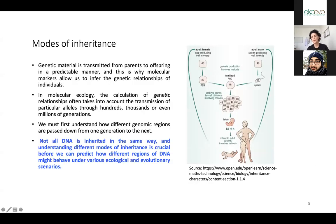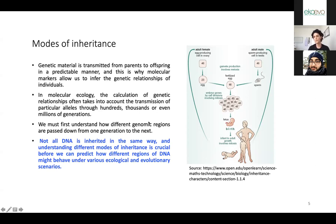Regarding models of inheritance: we are the result of one egg and one sperm as humans. Most animals are like that, though some have clonal reproduction and don't need egg and sperm. In molecular ecology, calculation of genetic relationships often takes a lot of time — it can take transmission over thousands, sometimes millions of years and millions of generations, so it is not an easy process.